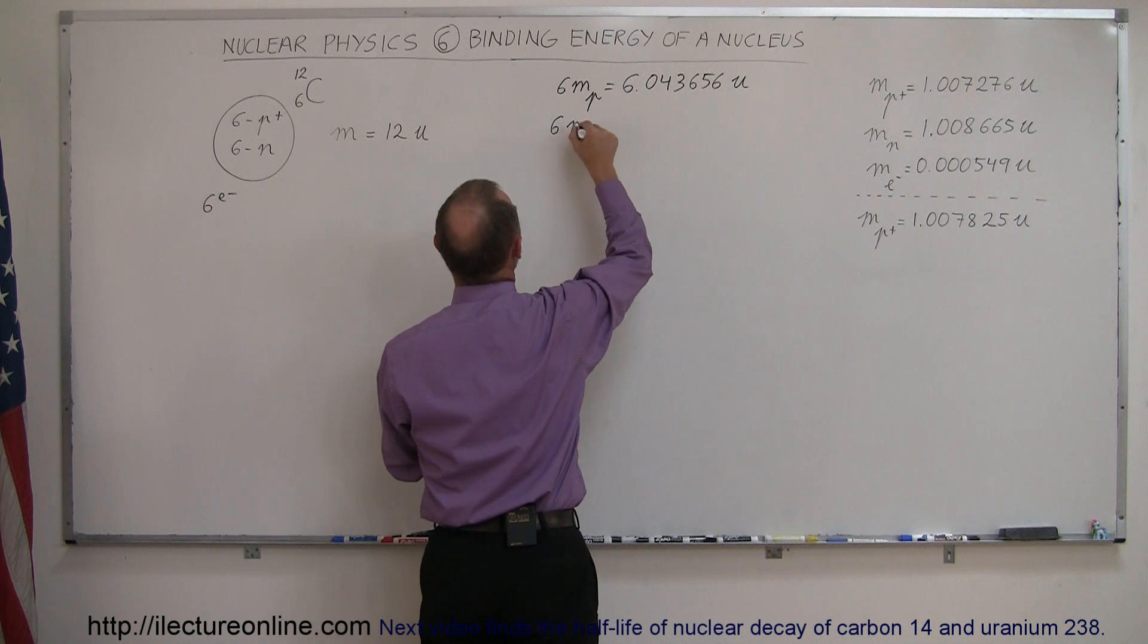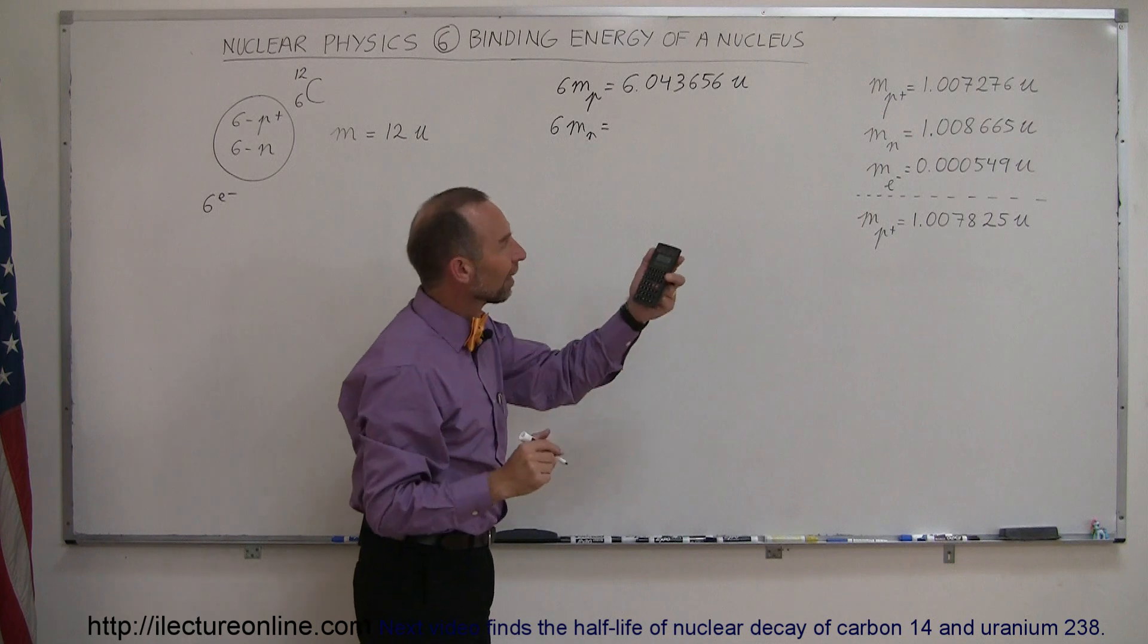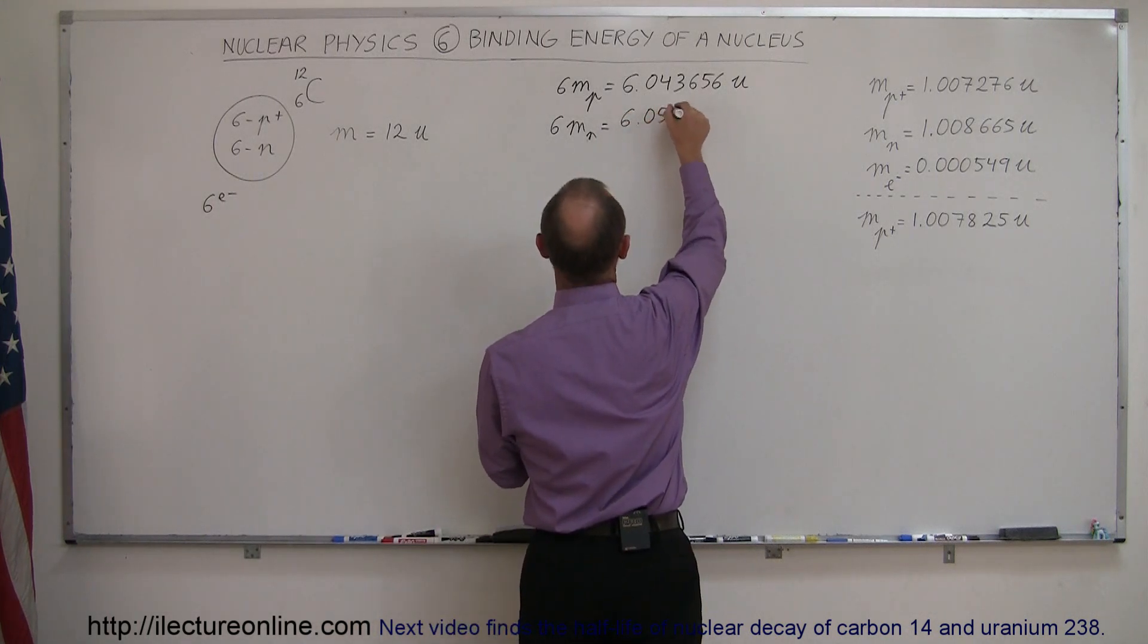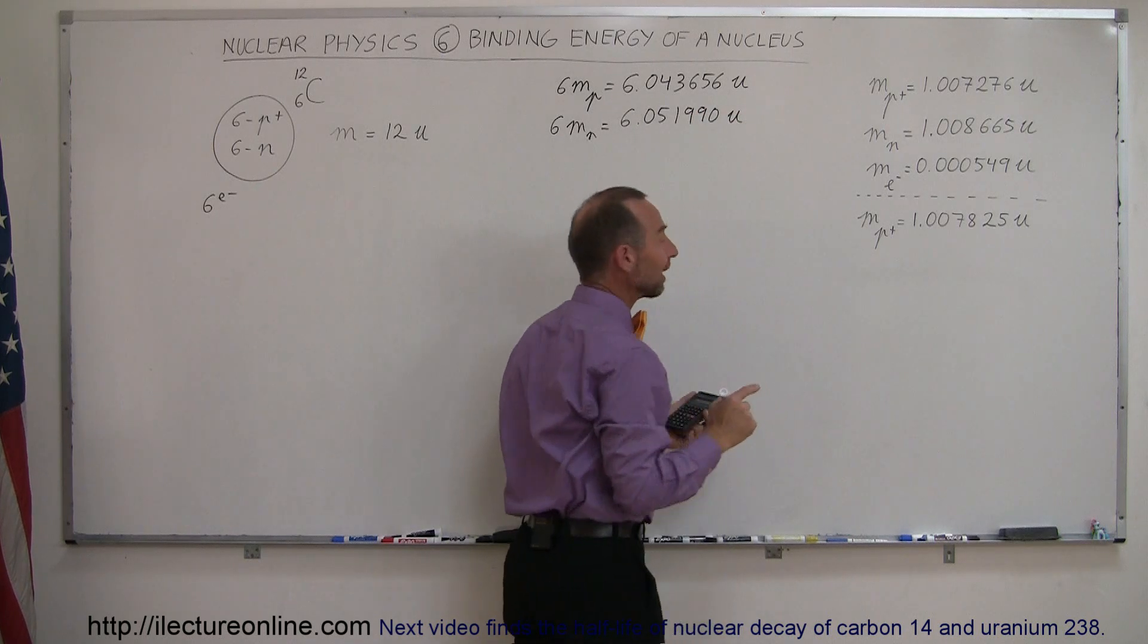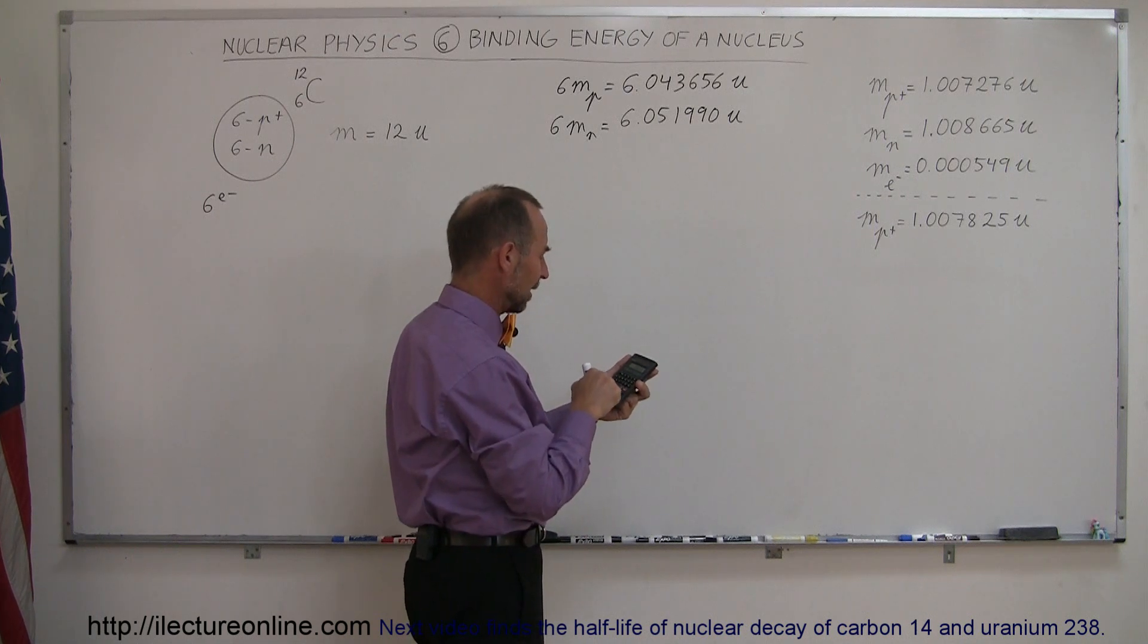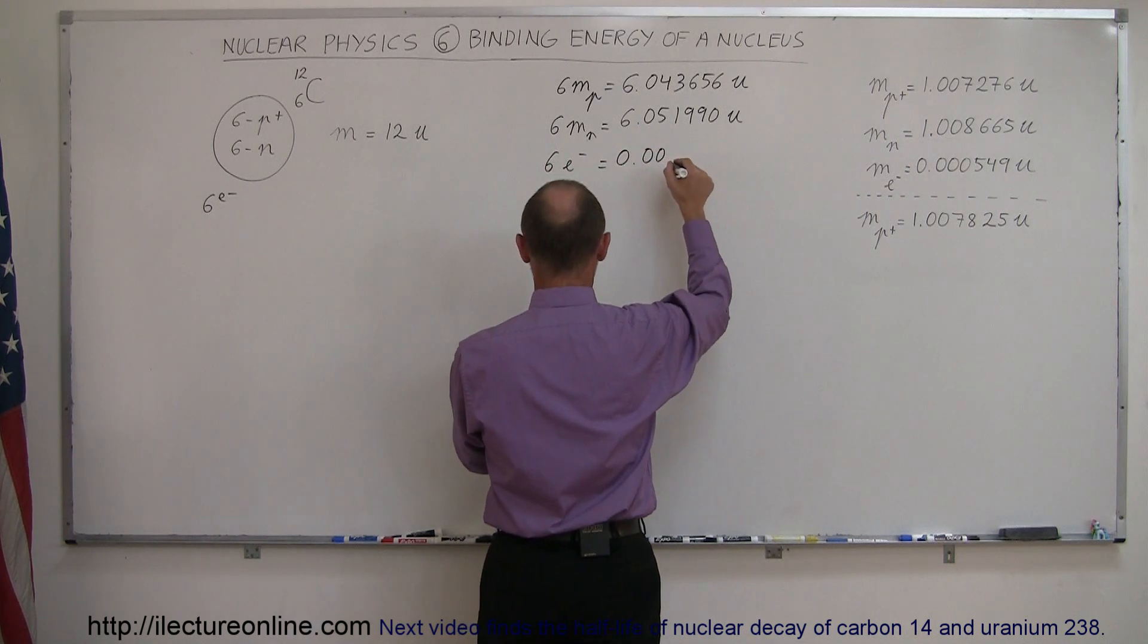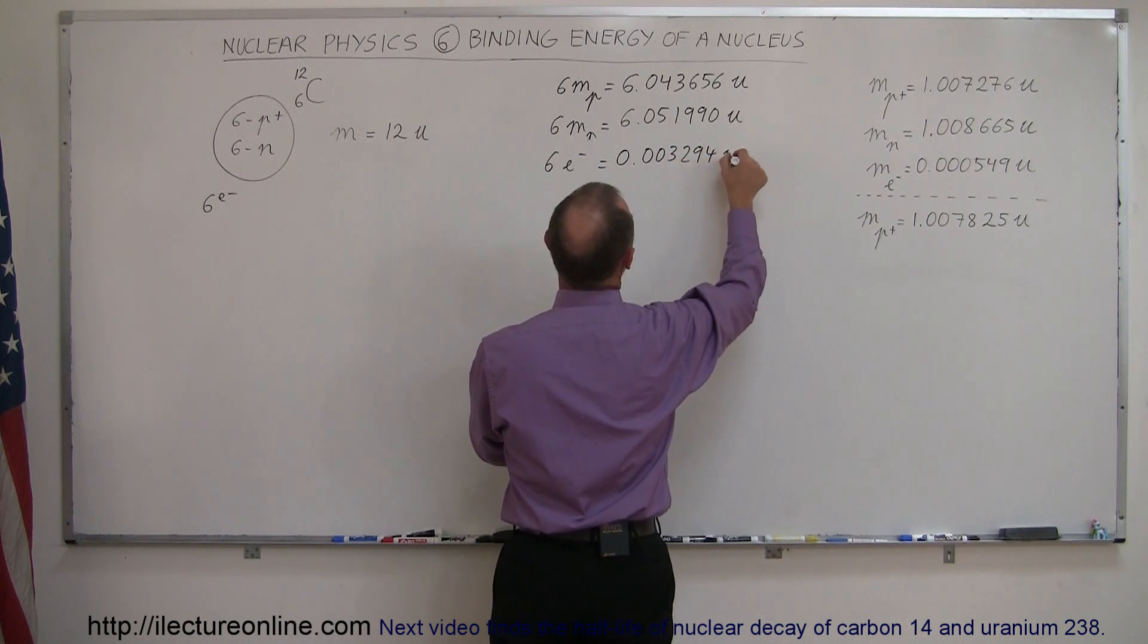Now six times the mass of a neutron, that's six times 1.008665, which equals 6.051990 atomic mass units. And finally the mass of six electrons, so 0.000549 times 6 equals 0.003294 atomic mass units.